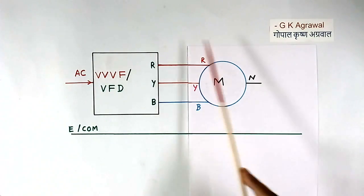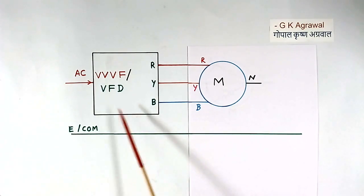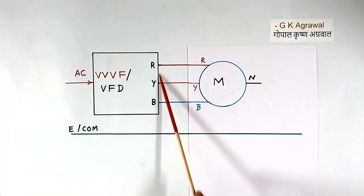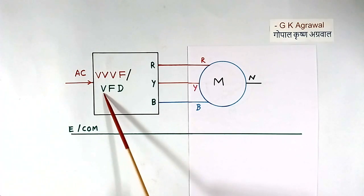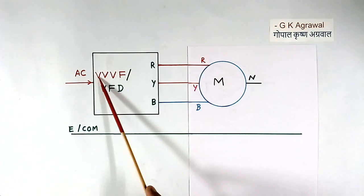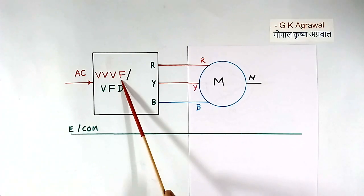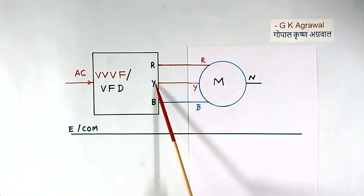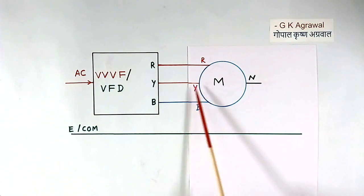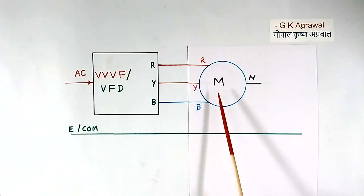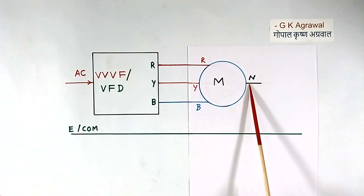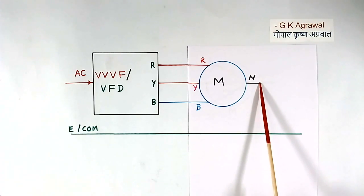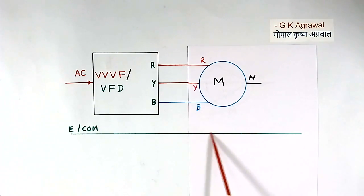Here I have shown one view of the system. This is single-phase AC. This is the full control system of a variable frequency drive, or variable voltage variable frequency system. This is generating 3-phase voltage: R, Y, and B. These 3 phases are connected to the motor. This is the neutral of the motor, which is not connected anywhere. And this is earth or common.